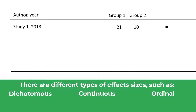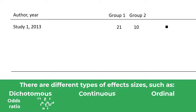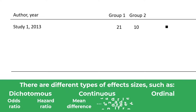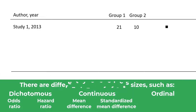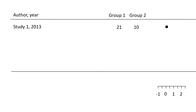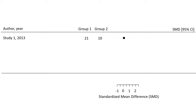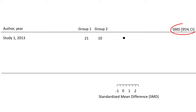Common examples you will most likely see in meta-analyses are odds ratios, hazard ratios, mean difference, or standardized mean difference. In this example, the effect size is the standardized mean difference. I know this is the case because the label on the axes states standardized mean difference, and the abbreviation SMD is quoted at the top.